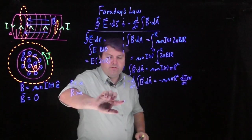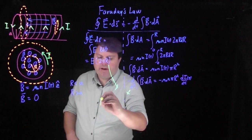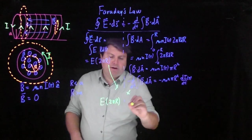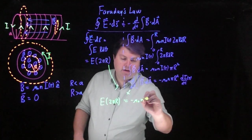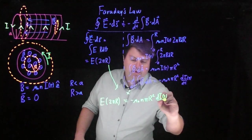So now what we can do is we can combine these two. So I have E times 2 pi r is equal to negative mu naught n pi r squared di of t dt.